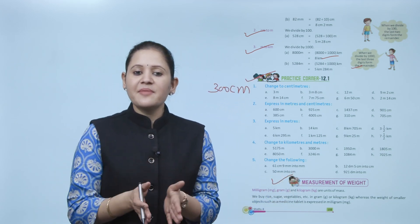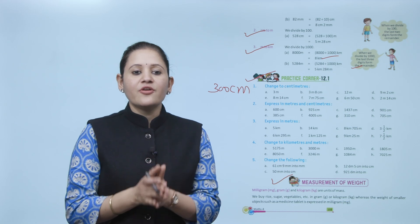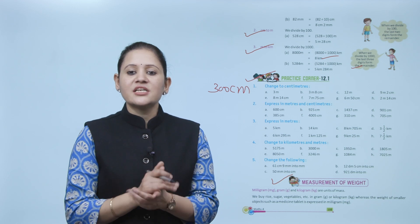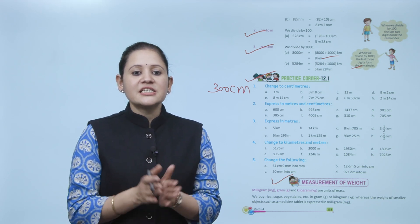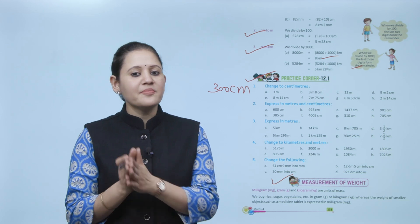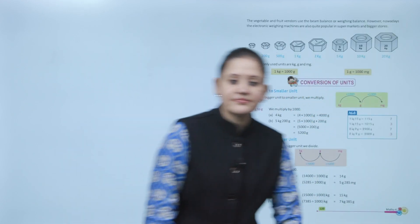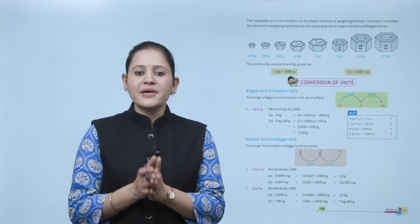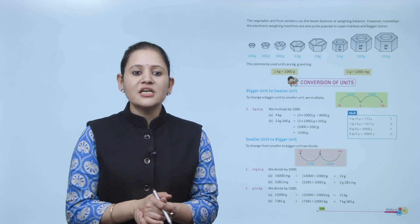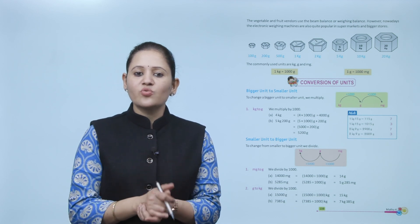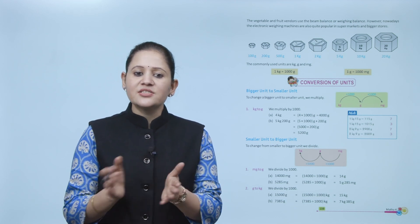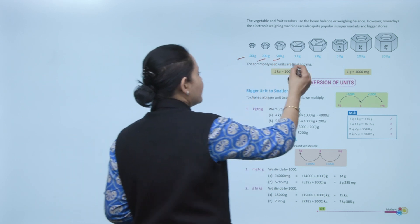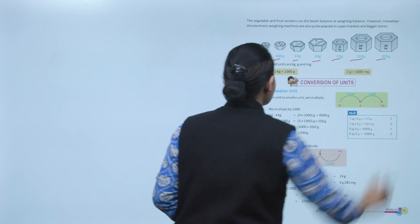Milligram, gram, and kilogram are the units of mass. We buy rice, sugar, vegetables, etc. in grams and kilograms, whereas the weight of smaller objects such as medicine tablets is expressed in milligrams. Vegetable and fruit vendors use a beam balance or weighing balance; however, nowadays electronic weighing machines are also popular in supermarkets and bigger stores. Some common weights are 100g, 200g, 500g, 1 kg, 2 kg, 5 kg, 10 kg, and 20 kg.